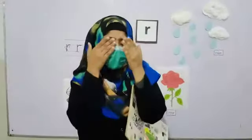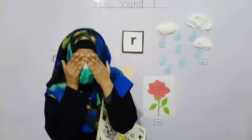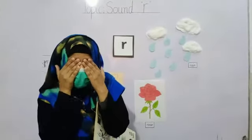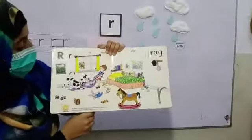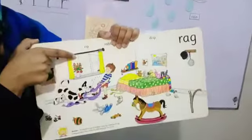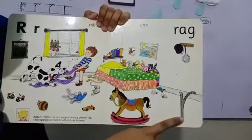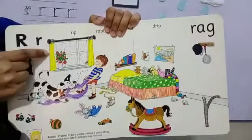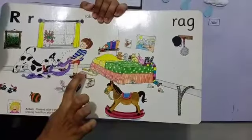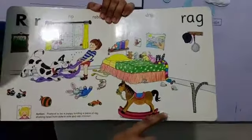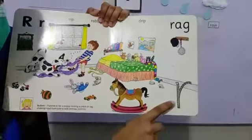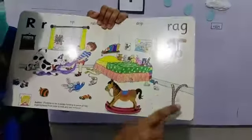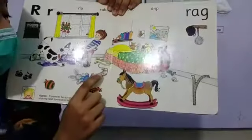Let's do eyes high. Eyes high. With my little eye, something begins with R. Look here. R is for rain. R is for rose. R is for rope. R is for rabbit. R is for racket. R is for rat.